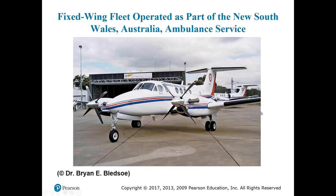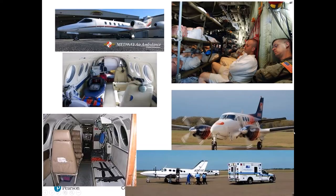Here you can see a turboprop engine used by the New South Wales Ambulance Service in Australia — a government-operated facility with several aircraft. Australia is roughly as wide as the United States, so a cross-country trip that would take three days by ambulance can be accomplished in less than six to eight hours by fixed wing.